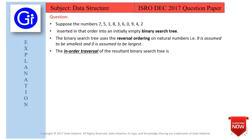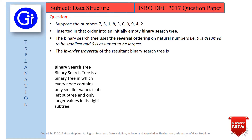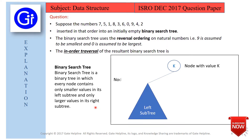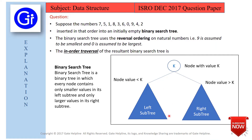Before starting the explanation, let's recall what a binary search tree is. A binary search tree is a binary tree in which every node contains only smaller values in its left subtree and only larger values in its right subtree. Here we see a node k, with values less than k on the left and values greater than k on the right.